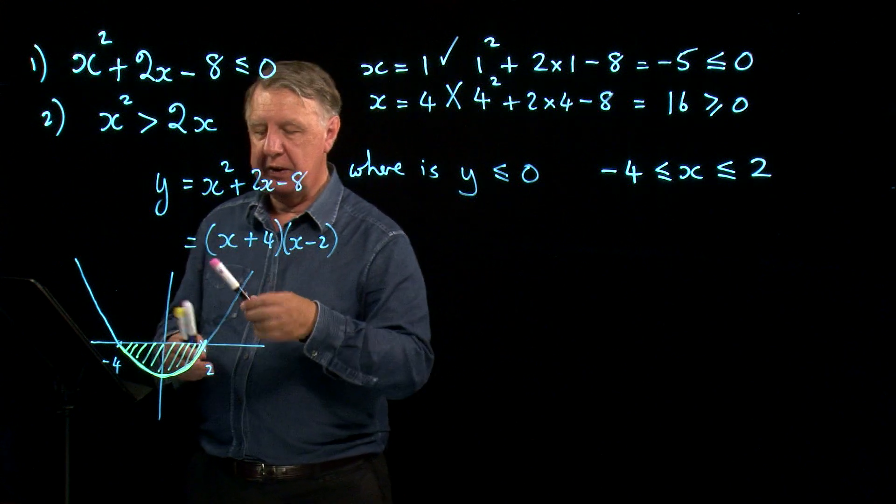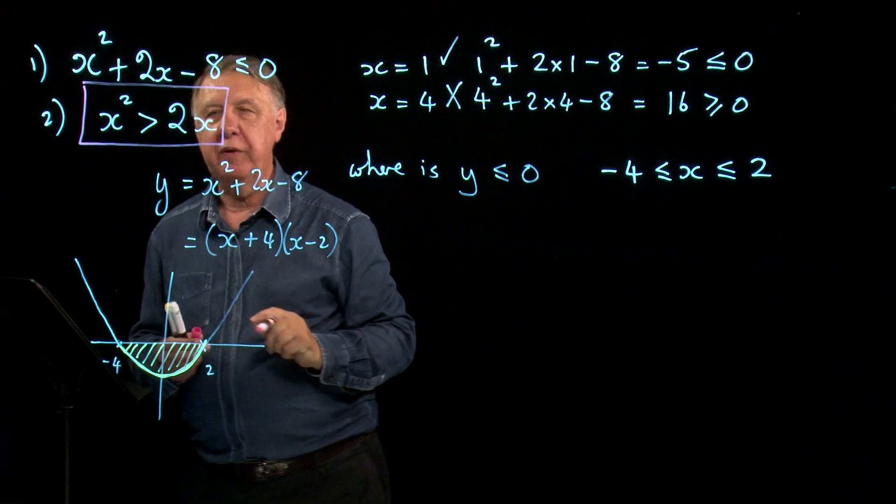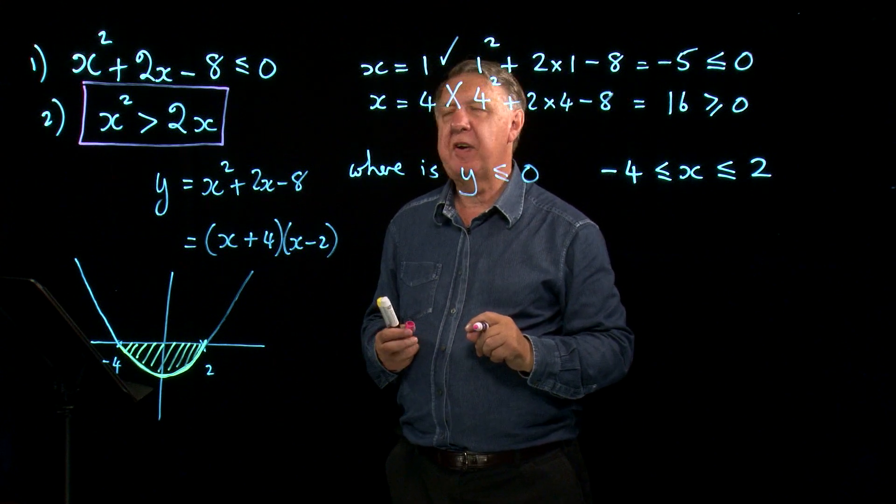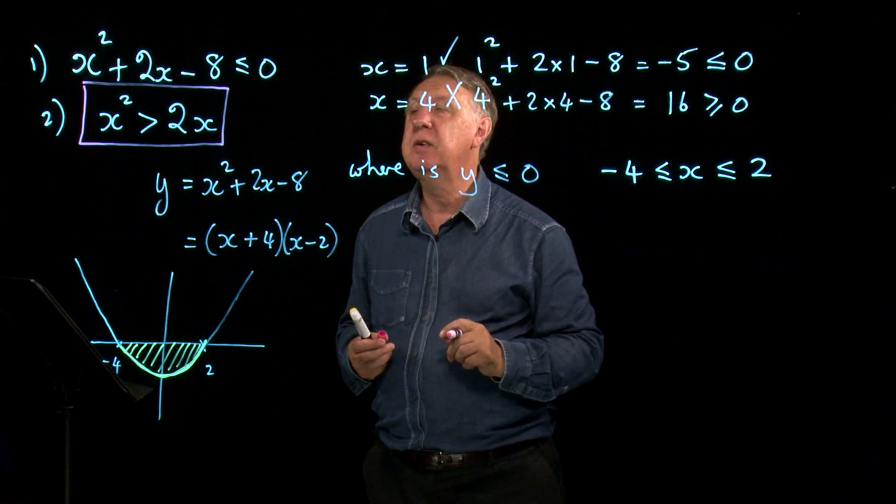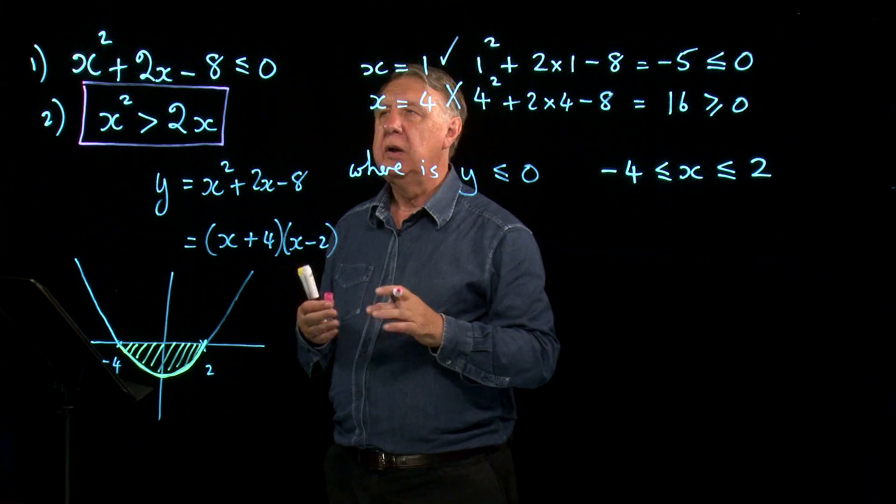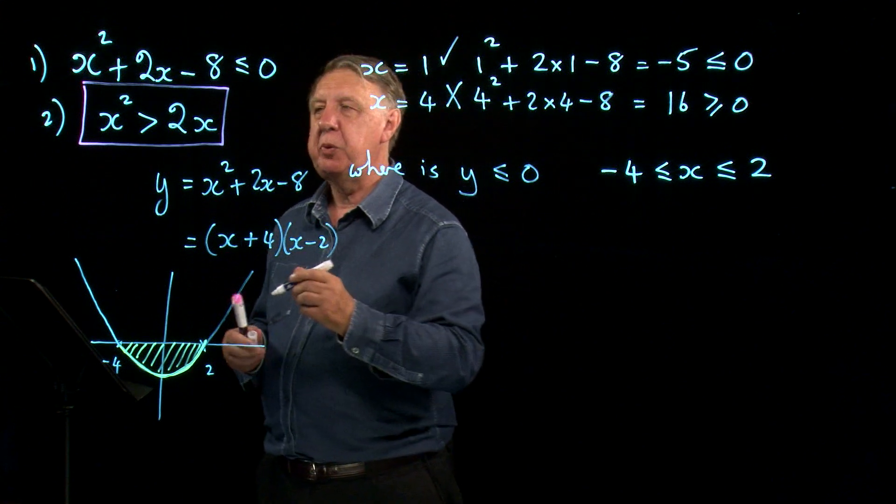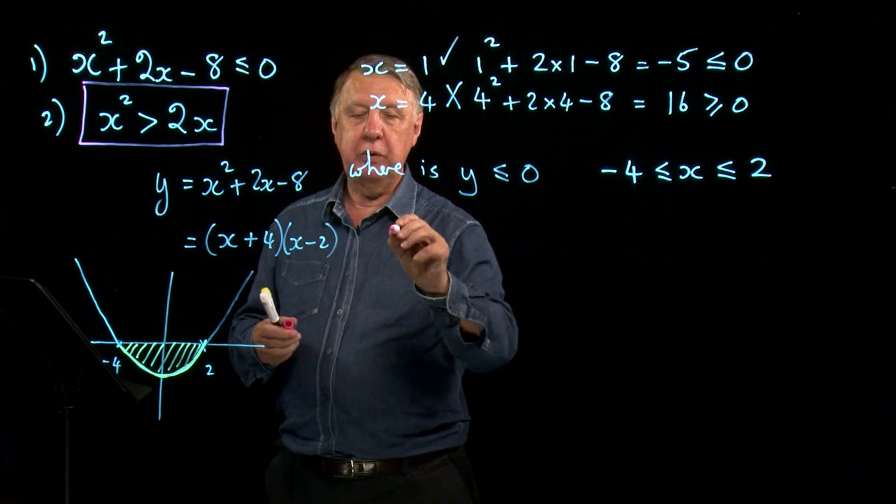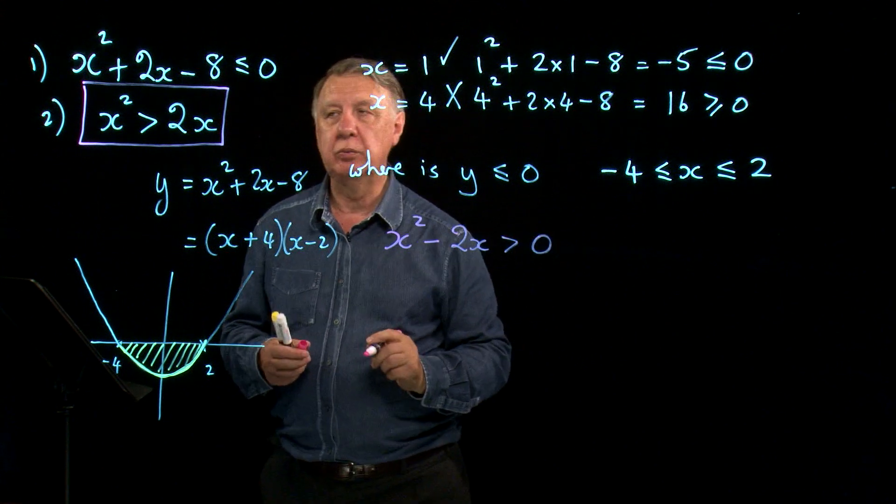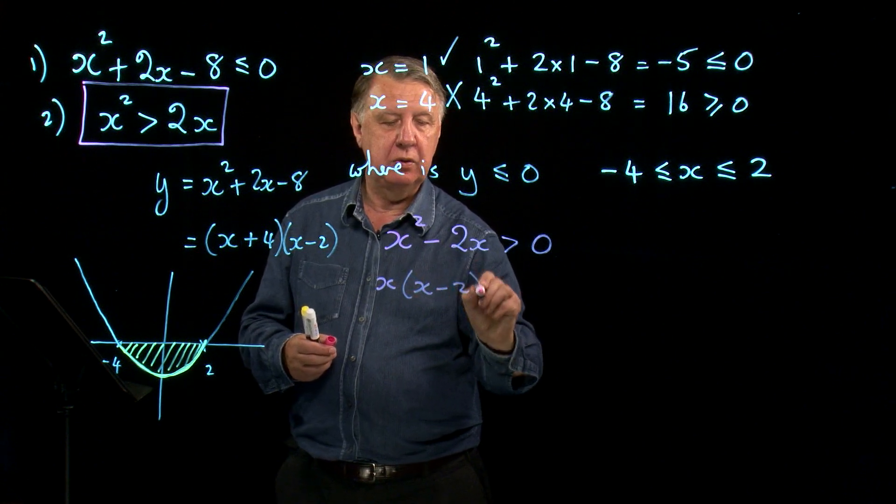Let's look at the second example. It's very tempting to do some very silly things with this. It's very tempting to divide by x. Please don't do that. Dividing inequalities is a pretty dangerous occupation. Let's put them on to one side. So we'll write x squared, take away 2x, greater than 0. Factorize: x times x take away 2, greater than 0.